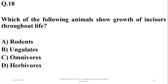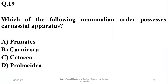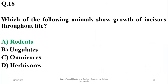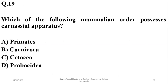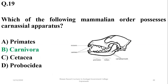Question 18: Which of the following animals show growth of incisors throughout their life? Incisors grow in rodents throughout life, so the right option is A. In other animals, incisors grow in permanent and deciduous teeth but not throughout life. Question 19: Which mammalian order possesses the carnassial apparatus? It is found in order Carnivora for further digestion of large chunks of food, especially meat. The right option is B.